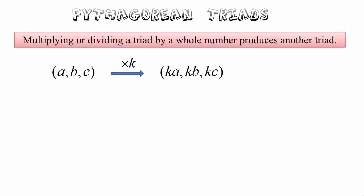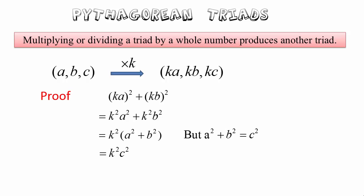We can now show that those three sides also satisfy the theorem of Pythagoras. First of all, we can show on the left hand side, ka all squared plus kb all squared becomes k squared a squared plus k squared b squared. Taking out a common factor of k squared, we have k squared bracket a squared plus b squared. But remember that we know a squared plus b squared equals c squared. That comes from the original triad a, b, c. So we can replace a squared plus b squared by c squared, and we have k squared c squared. And that of course can be written as kc all squared, which is the third part of our triple.